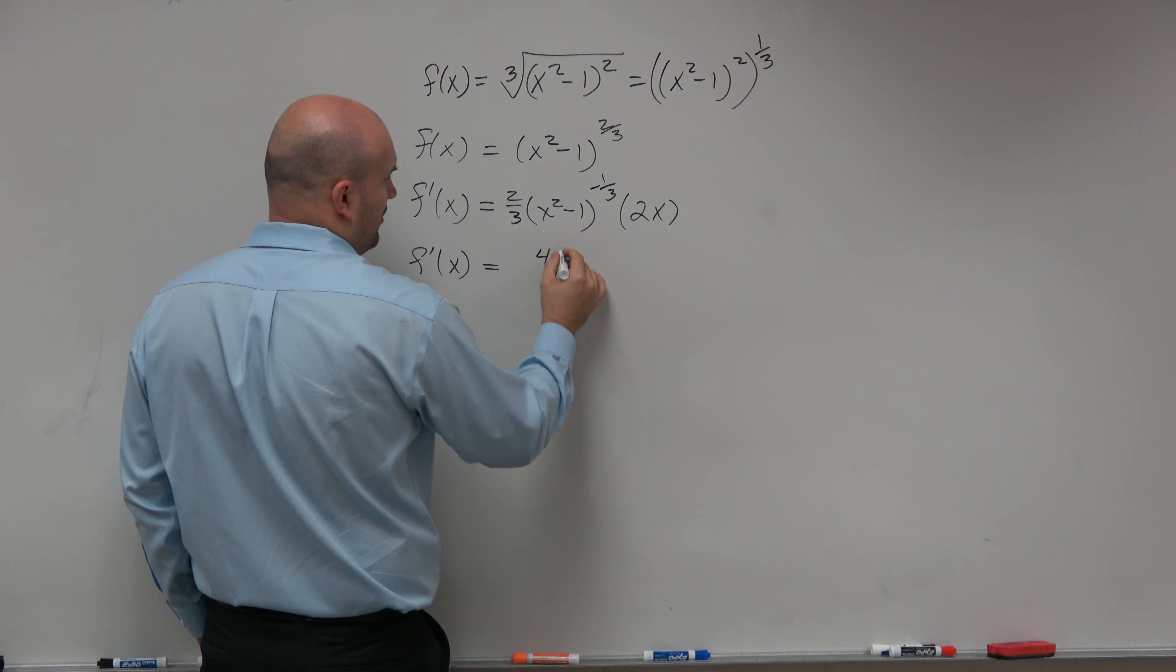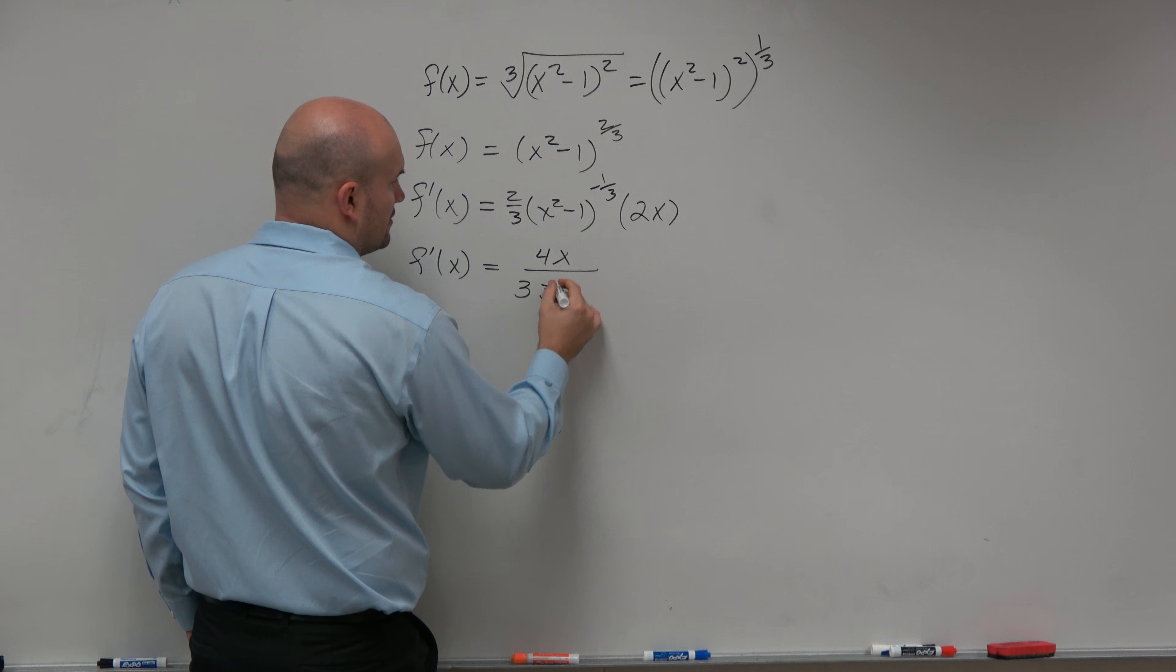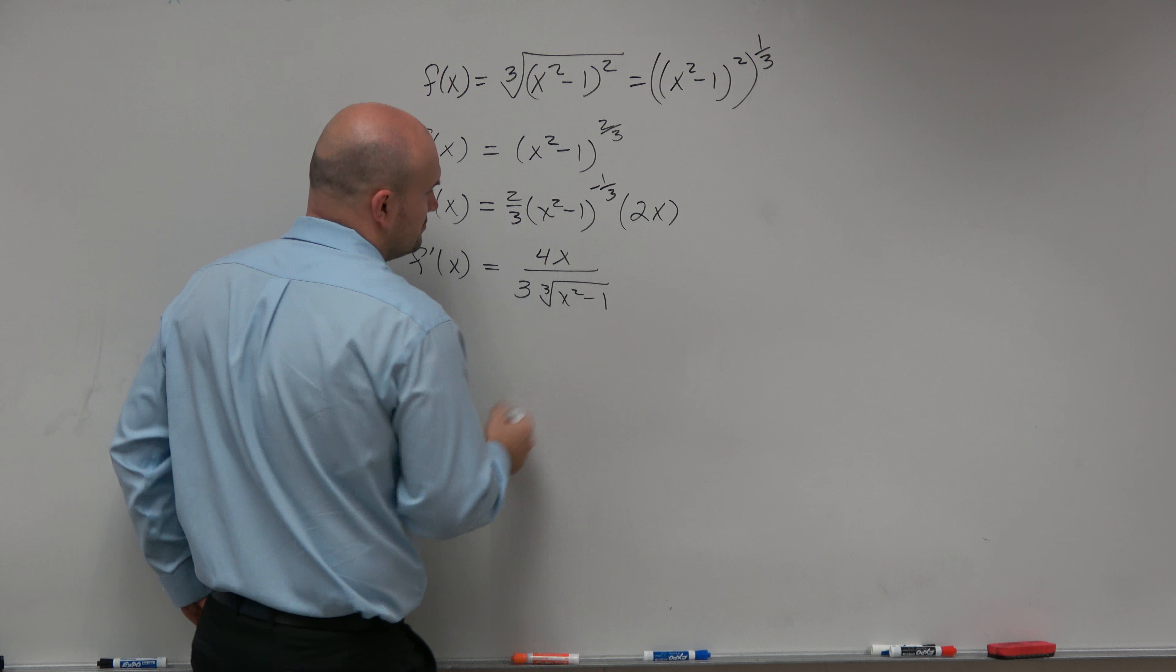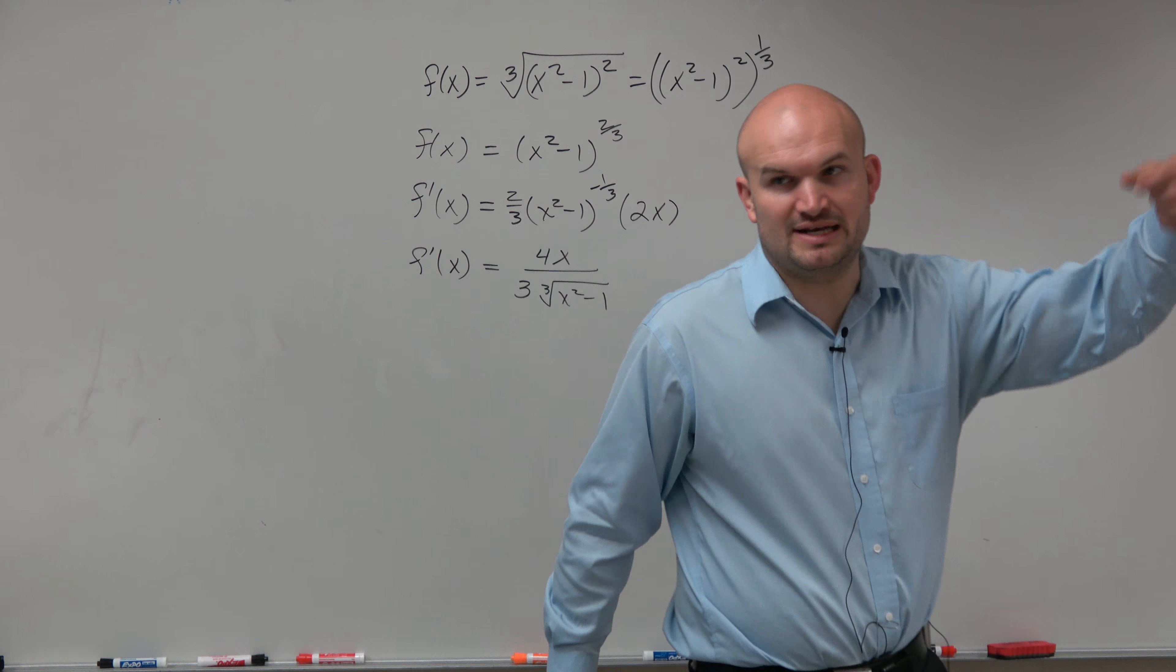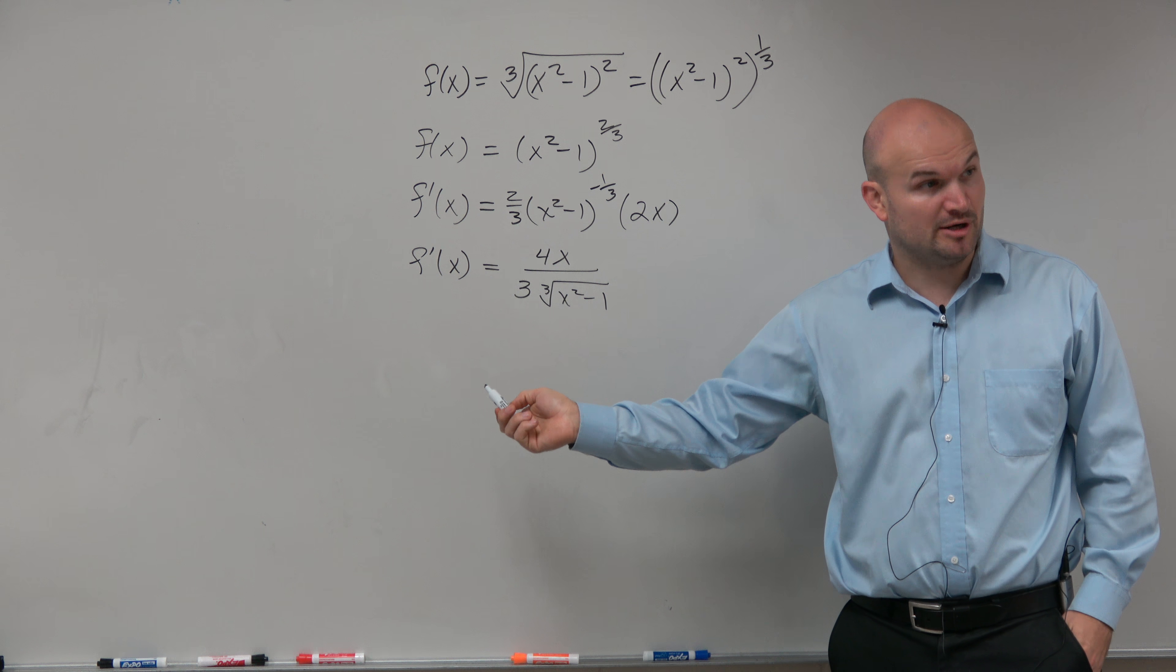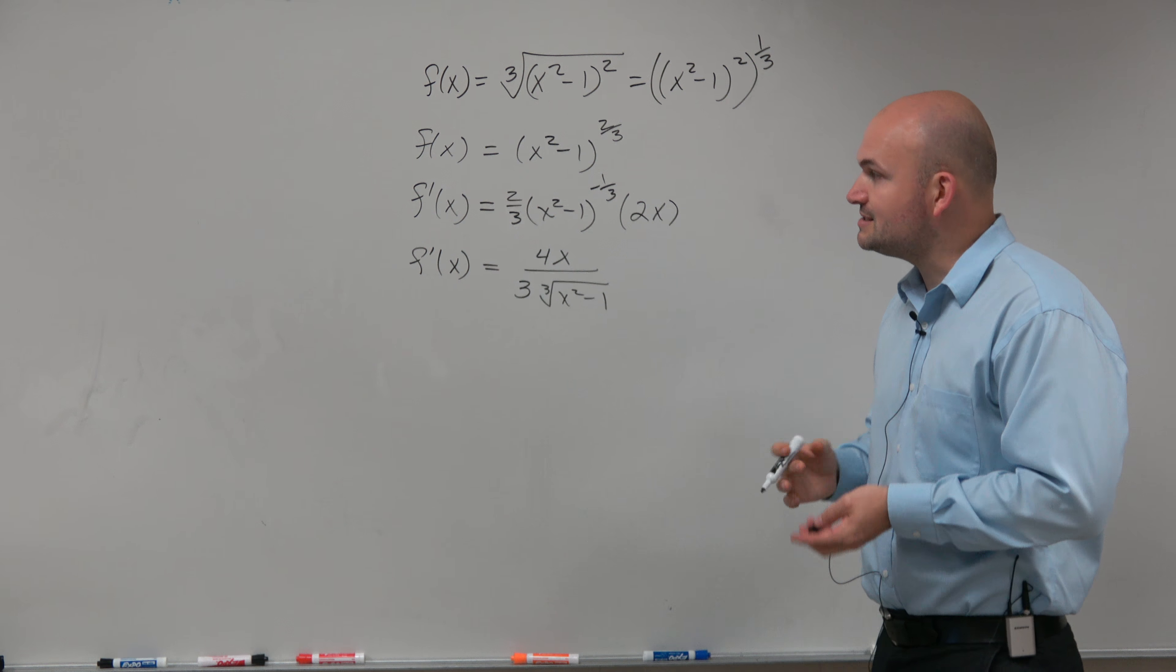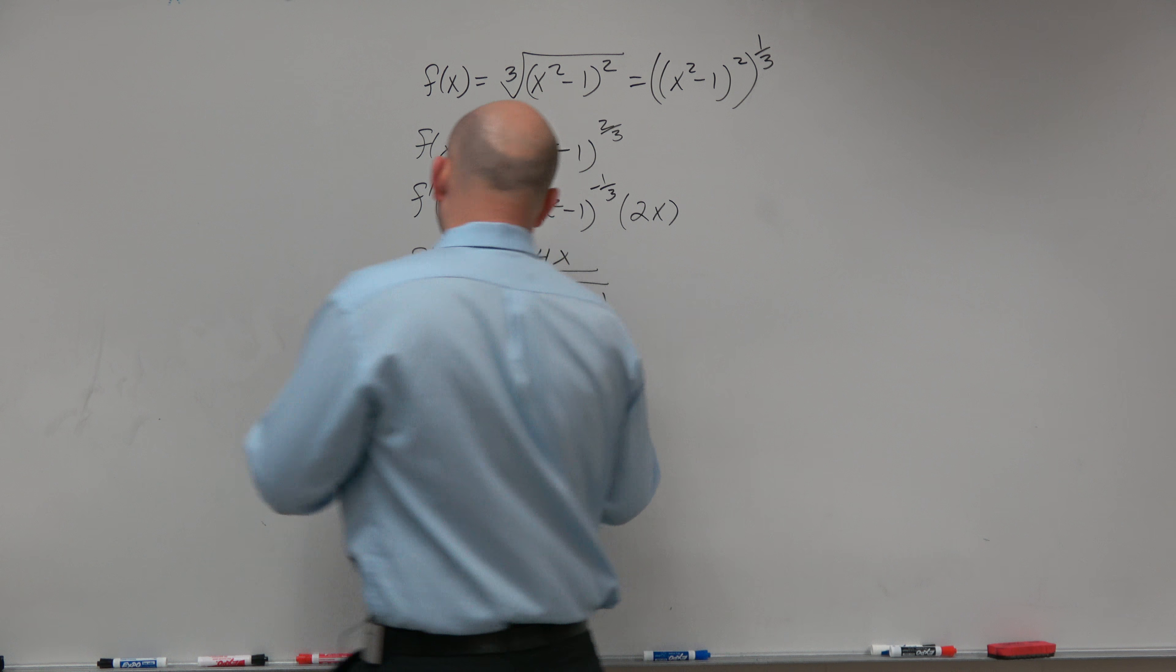2 times 2x is going to be 4x over 3, and then I'll take the cube root of (x² - 1). The exact same answer. I just got rid of the negative and put it down below. Because if you have a negative power, you put it in the denominator, it makes it positive. And I'm just rewriting it as a radical.